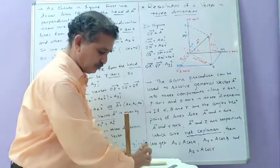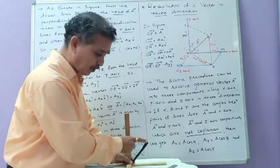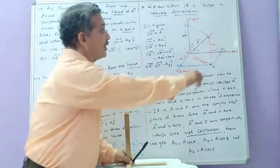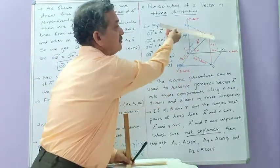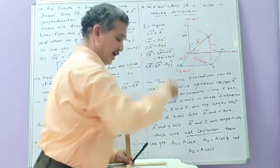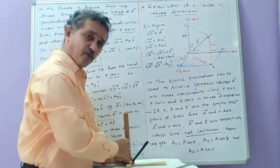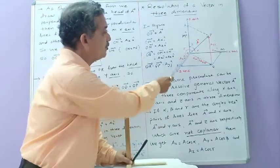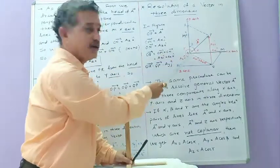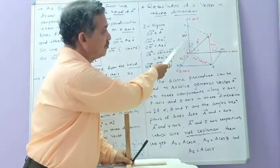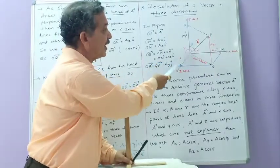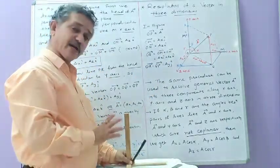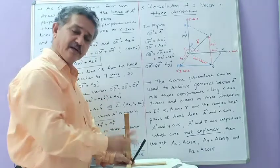Then from the head point P, you draw a perpendicular line PR to the y-axis. This cuts at point R. You measure the distance from O to R; this distance is AyJ because it is in the y-direction multiplied by unit vector J. So vector OR is the y-component.